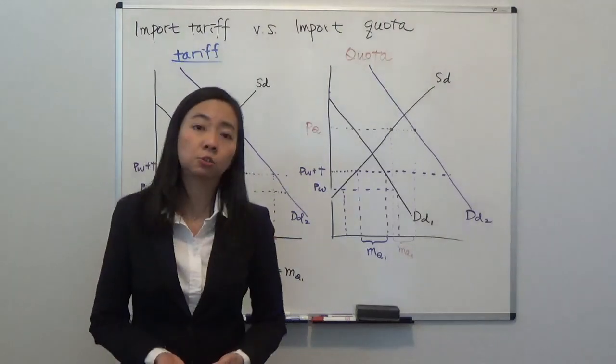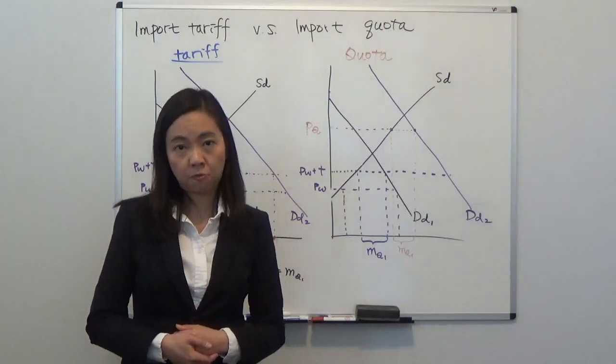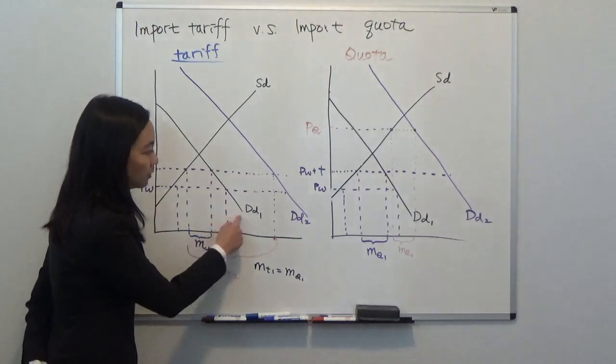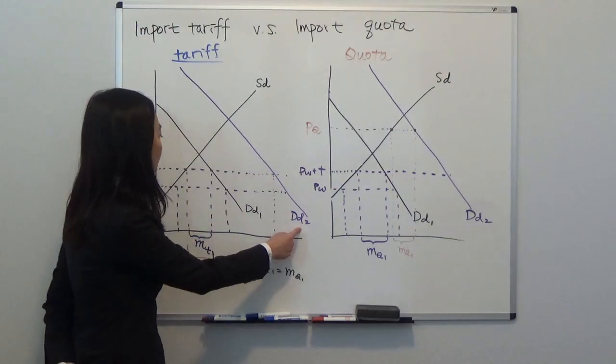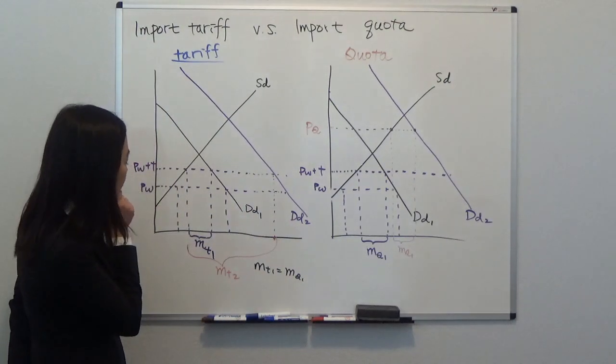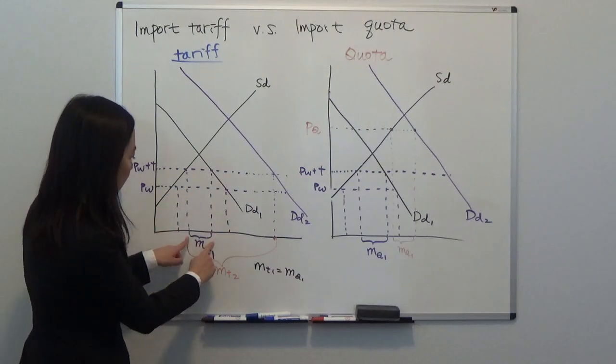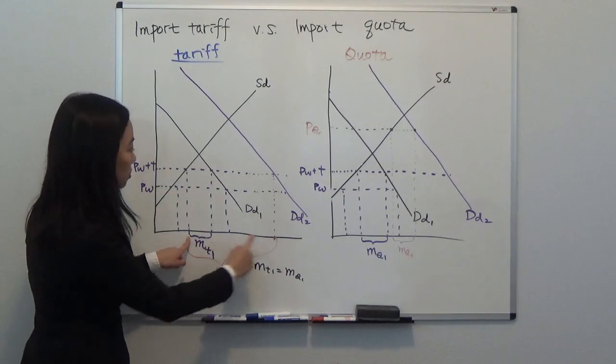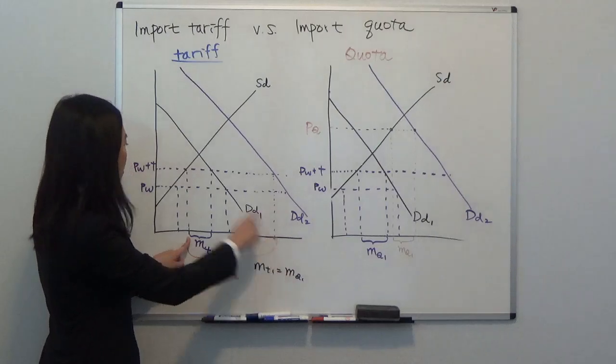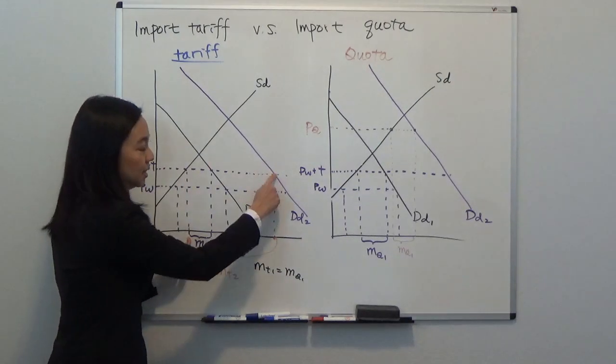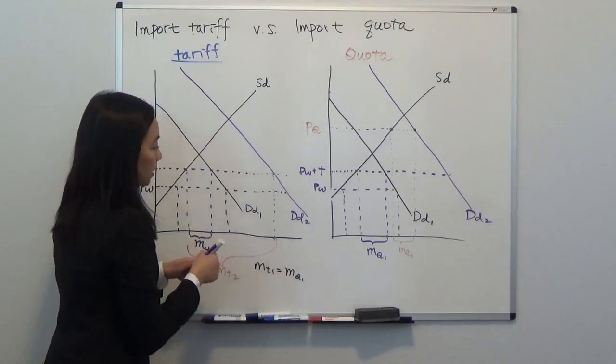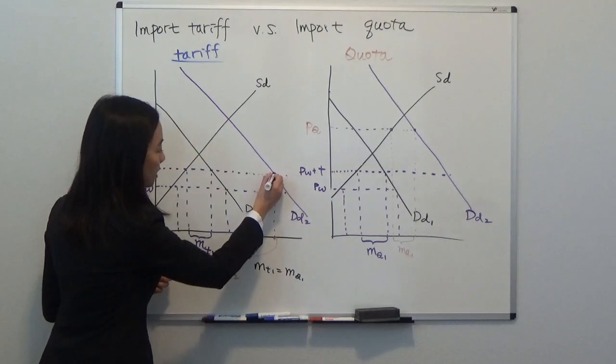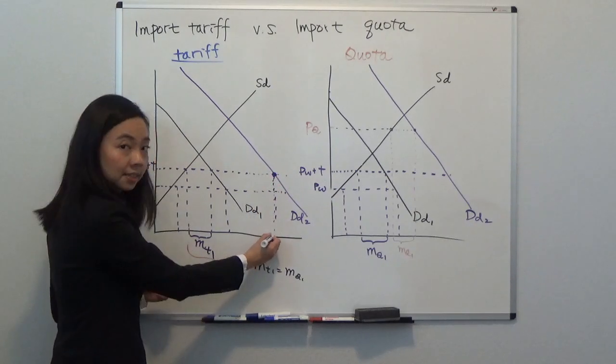You can see once the demand shifts to the right, your import will go from MT1 to MT2 because now your world price is PW+T. Looking at your new demand curve, that tells you quantity demanded is like this and domestic quantity supplied is here, so the difference will be your import.